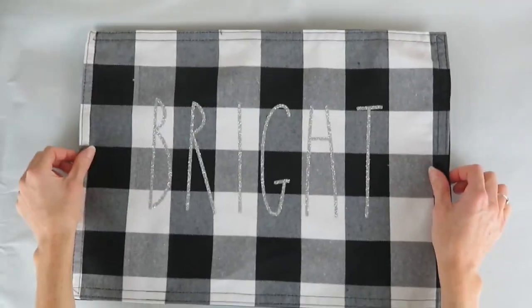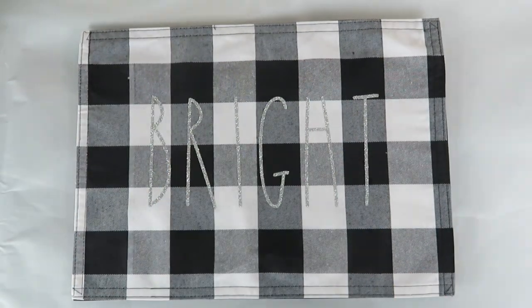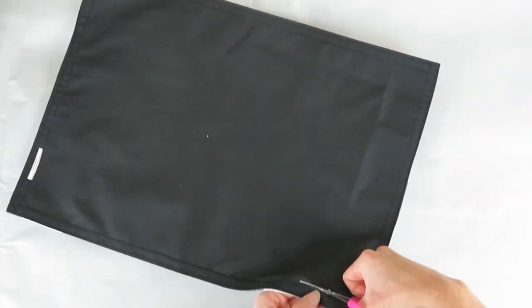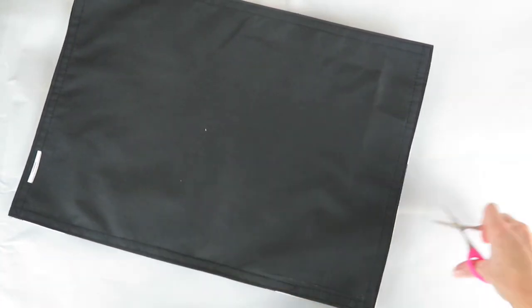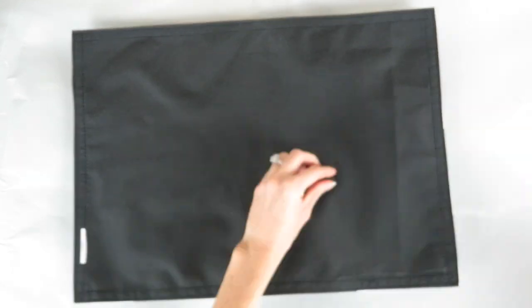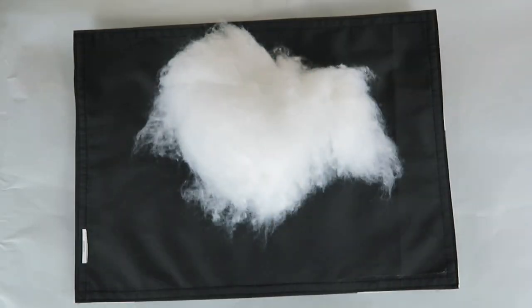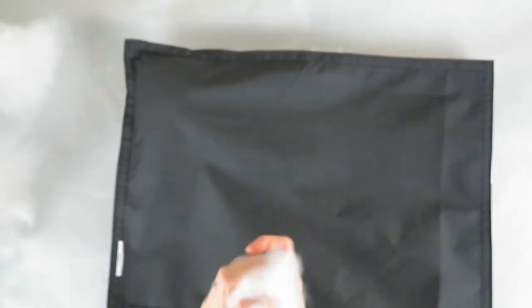After I got the words all sewn on, it was time to add the stuffing. So I just took this little pair of scissors that I got from the Dollar Tree and I made a little slit right along the seam, just big enough for me to get my hand and some stuffing through. And I stuffed them really well. You don't want to spare any stuffing on this step. You really want it to be nice and full. So really pack that stuffing in there.